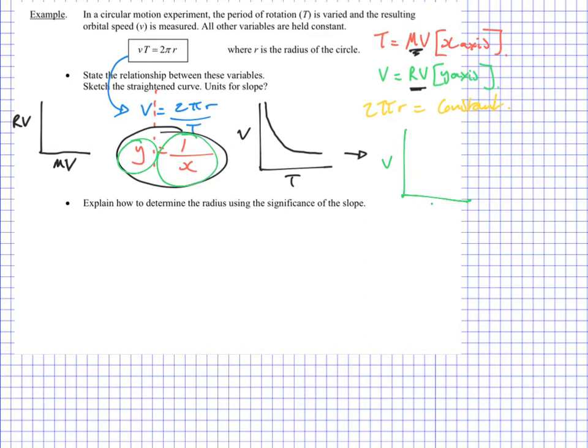But my x-axis needs to be inverted or reciprocated, I guess. So my x-axis is 1 over t. And if I do that I should get a straight line. And that's the key, that's the important skill. Next thing is to then think about what the slope is giving us. So this next part of the example is saying explain how to determine the radius. So now we're actually getting something out of our data. We're going to get a value for the radius. Maybe we didn't know that in our experiment.